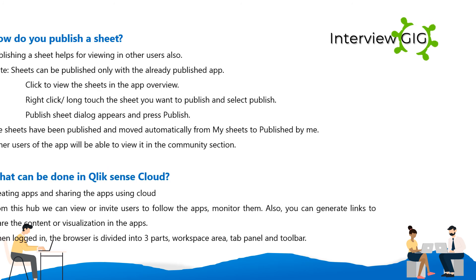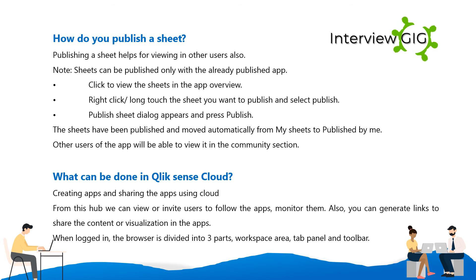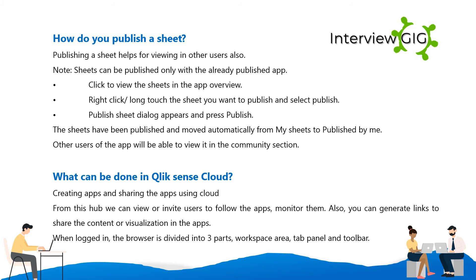How do you publish a sheet? Publishing a sheet makes it viewable for other users. Note that sheets can only be published within an already published app. Click to view the sheets in the app overview, right-click or long-touch the sheet you want to publish, and select Publish. The Publish Sheet dialog appears — press Publish. The sheet is then moved automatically from My Sheets to Published by Me, and other users can view it in the Community section.